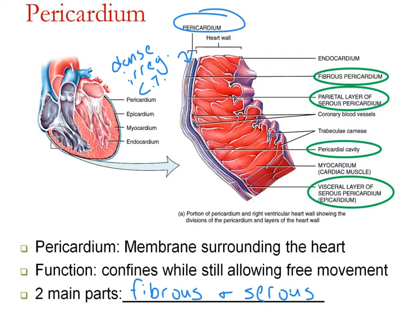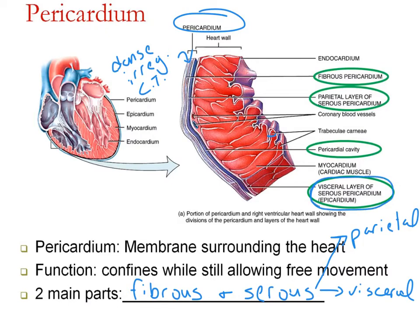Now the inner layer — or the serous layer — has two parts: the parietal and the visceral layers.